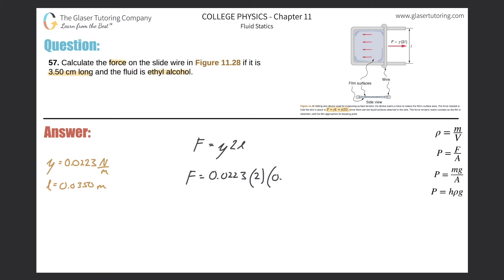And we have a value of 0.0350. And then all we need to do, take out that calculator and plug it in. So 0.0223 times two times 0.035. And voila, there's the answer.